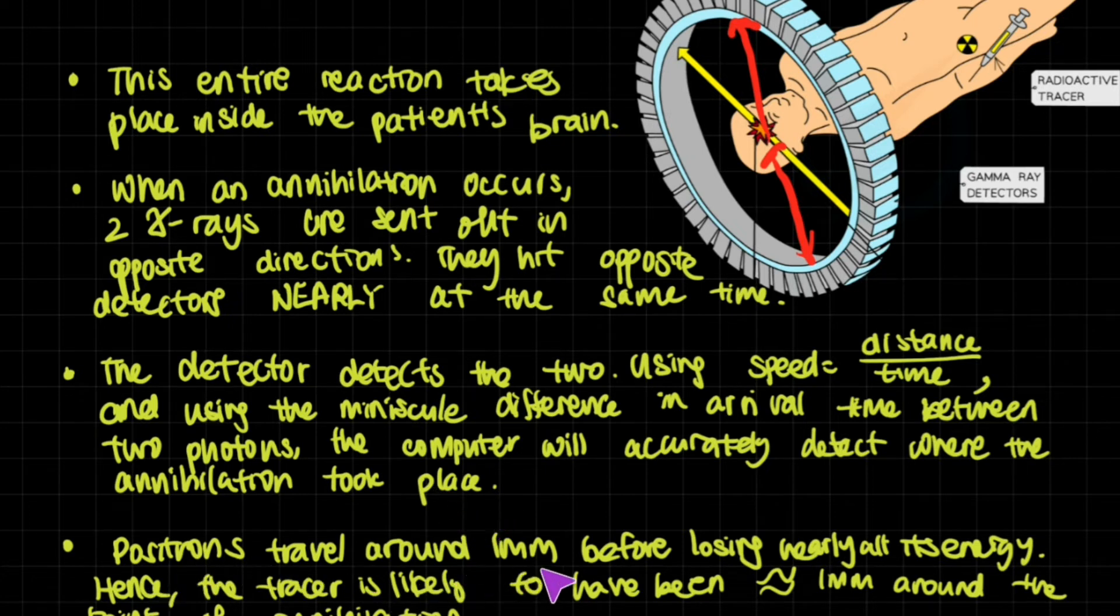The computer will accurately detect where the annihilation took place. Now positrons travel around 1 millimeter before losing nearly all of its energy, which means that this annihilation reaction that the computer was able to track and somehow determine the position of, it's likely to be 1 millimeter near the place where all of the tracers were gathering. So the tracer is likely to have been around 1 millimeter around the point of annihilation. So you have a plus minus 1 millimeter, and the computer can detect the position of the radioactive tracer.